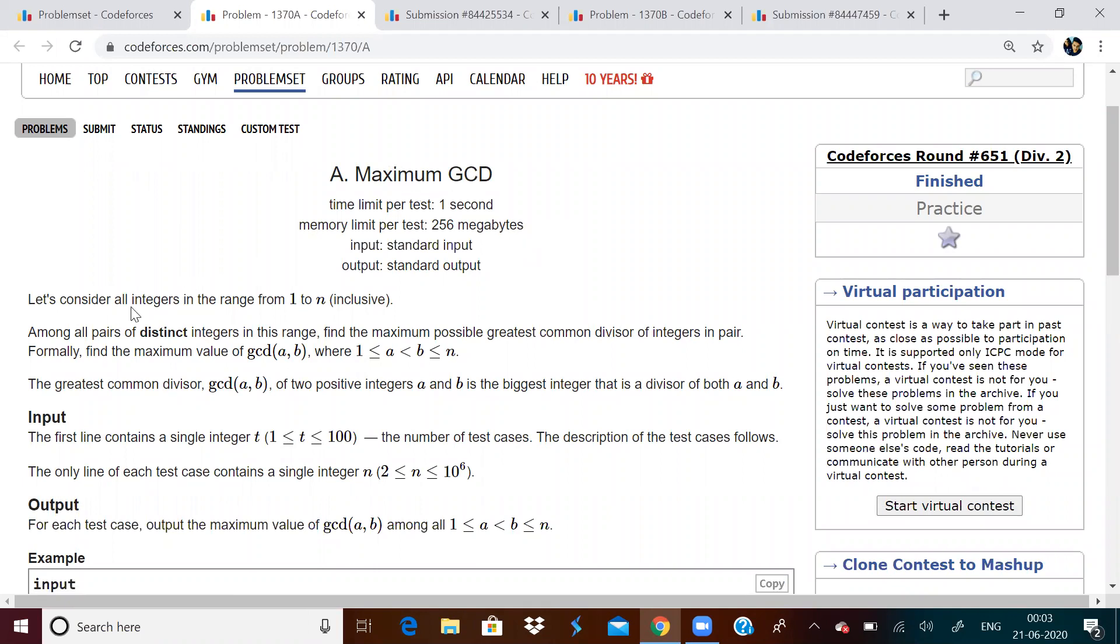Maximum GCD. Basically, we are given integers in the range 1 to n, and among all pairs of distinct integers, we have to find the maximum possible GCD of integer pairs. So we have to take two numbers such that the GCD is maximum.